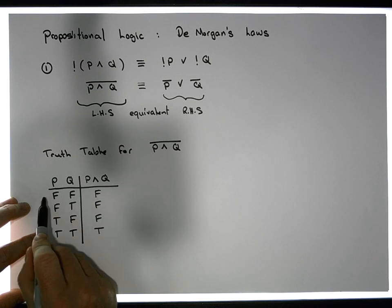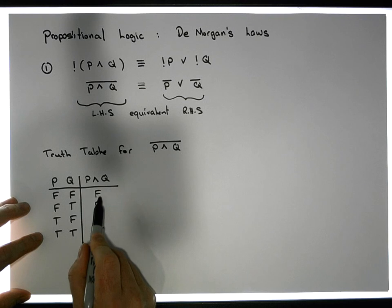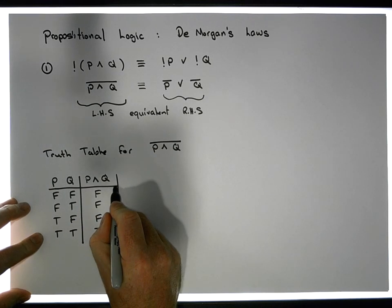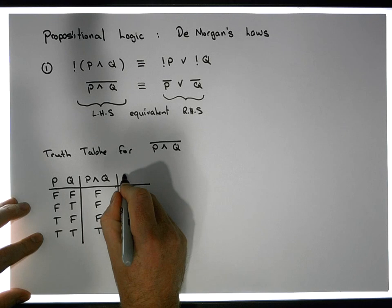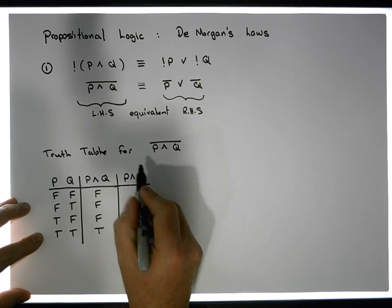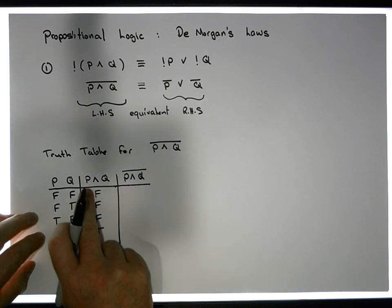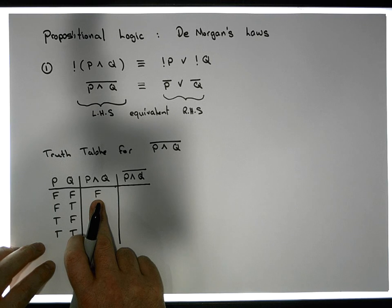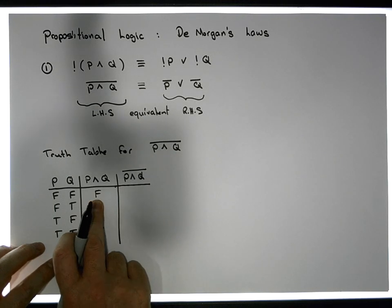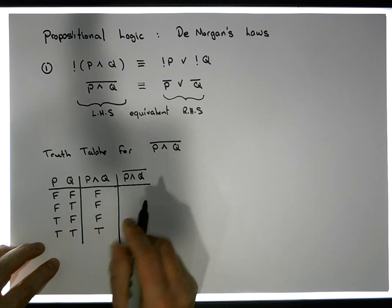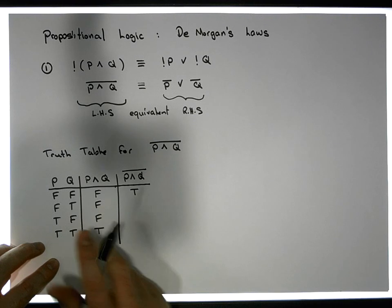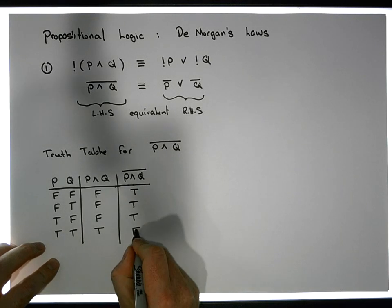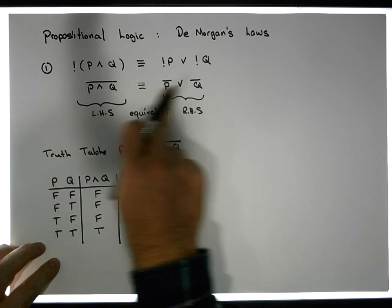Now that we've evaluated the AND under all possible inputs, we're going to negate this proposition by adding another column to our table. I look at the P ANDed with Q column. We know the way negation works: if the value is false, its negation is true; if the proposition is true, its negation is false. So falses go to trues and trues go to falses. The negation of P ANDed with Q is true for the first three rows and false for the last row. This is the output for the left-hand side of this equivalent statement.